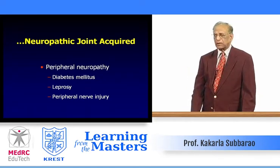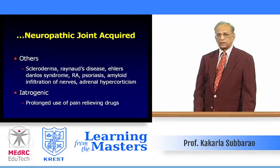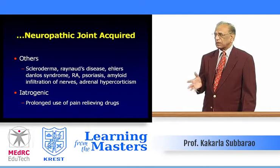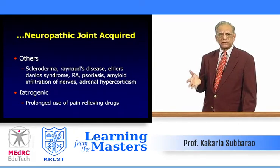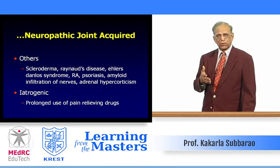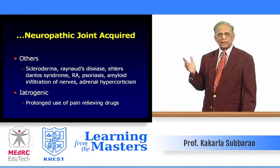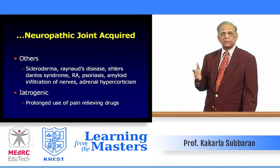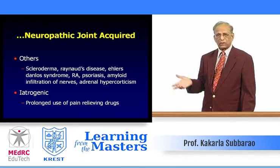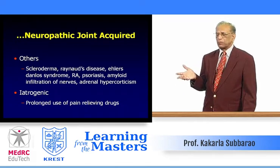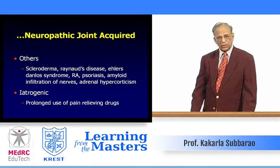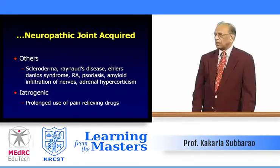Other causes of neuroarthropathy include scleroderma, Raynaud's disease, Ehlers-Danlos syndrome with multiple dislocations eventually resulting in neuroarthropathy and osteoarthritis. Prolonged use of pain-killing drugs over time may result in neuroarthropathy. Rheumatoid arthritis, psoriasis, amyloid infiltration of nerves, adrenal hypercorticism, and iatrogenic prolonged use of non-steroidal pain-relieving drugs may also produce neuropathic joint.